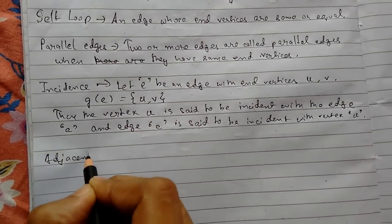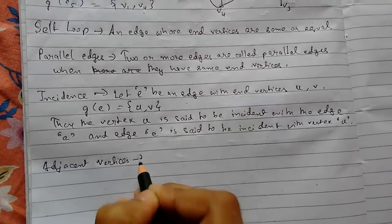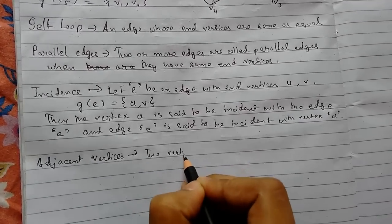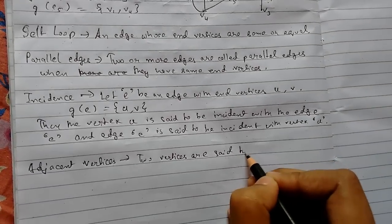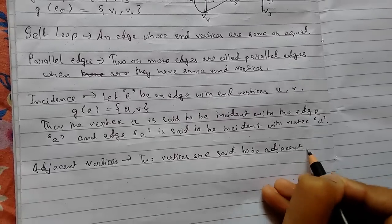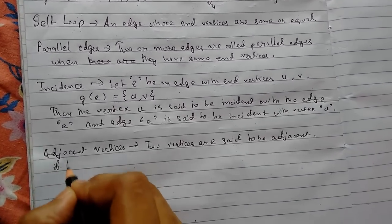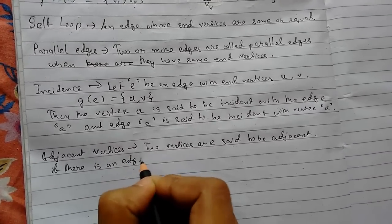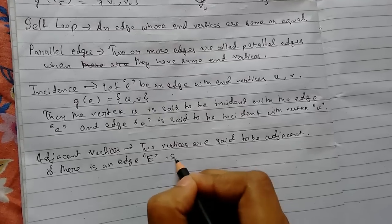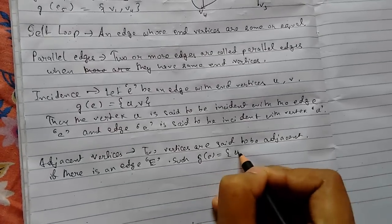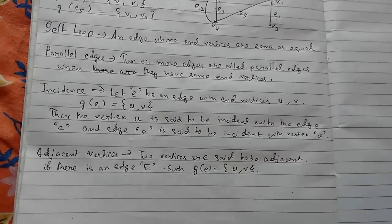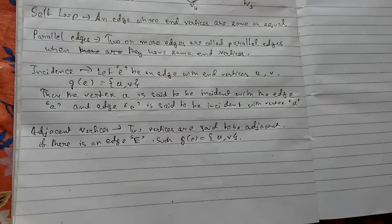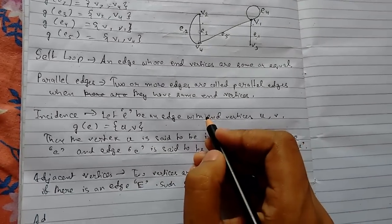Now adjacent vertices. Two vertices are said to be adjacent if there is an edge e such that the two vertices are u, v. So there must be an edge between two vertices. Then the two vertices will be adjacent vertices.